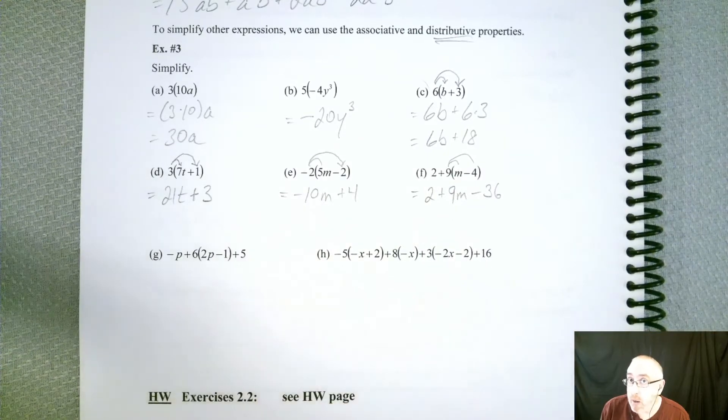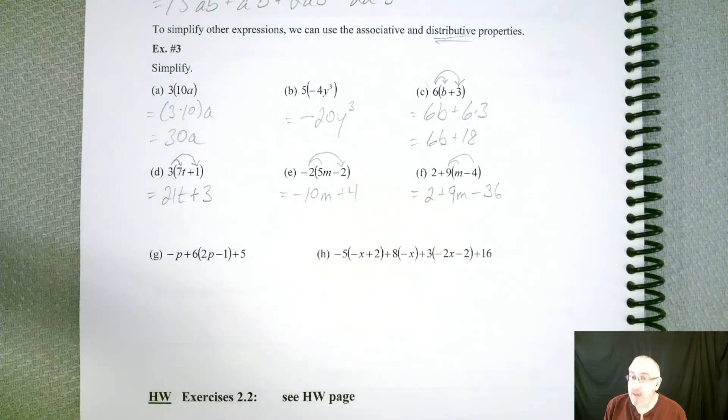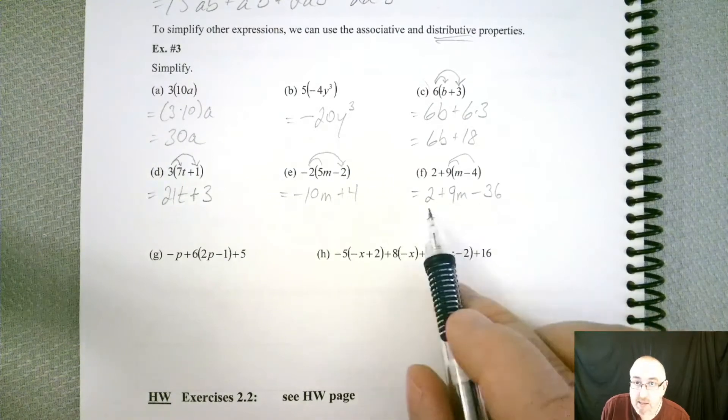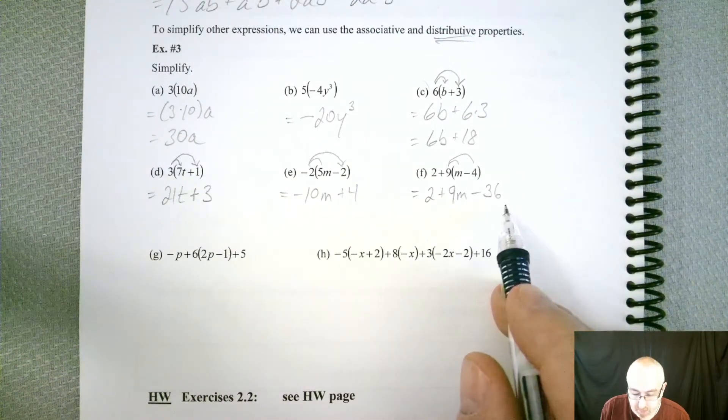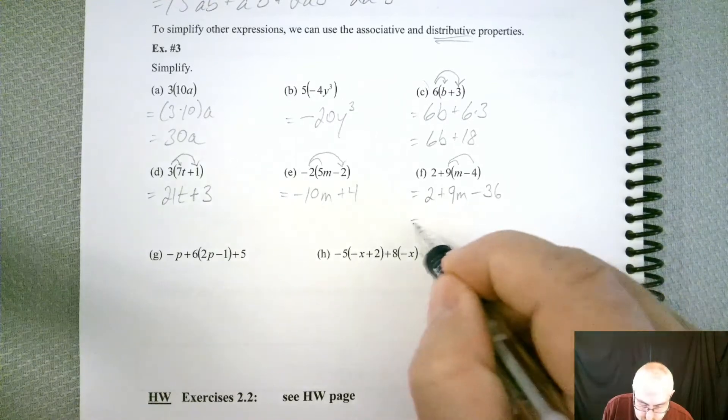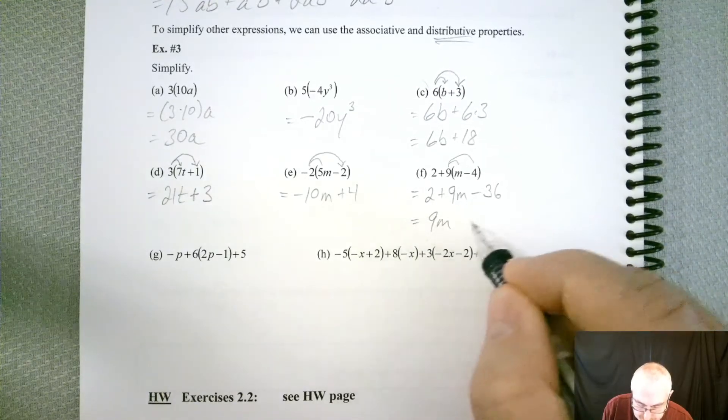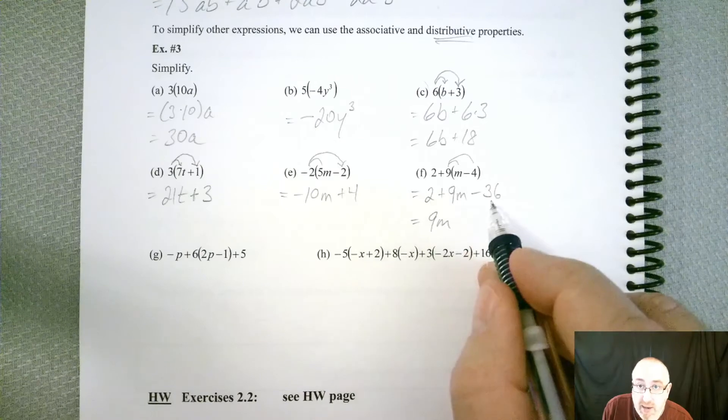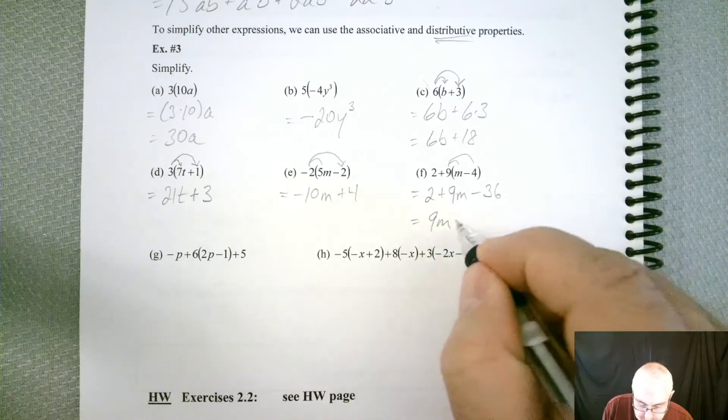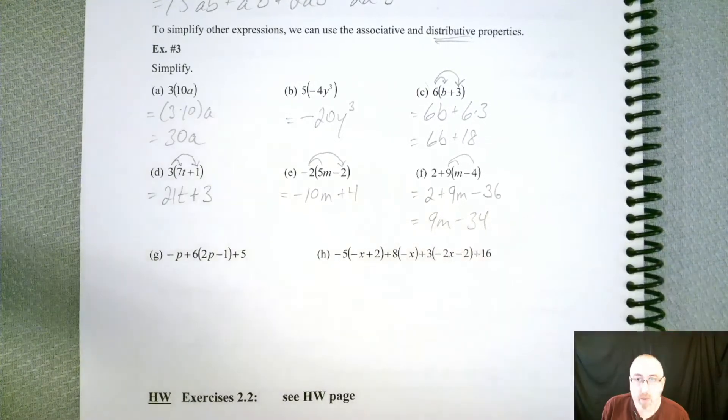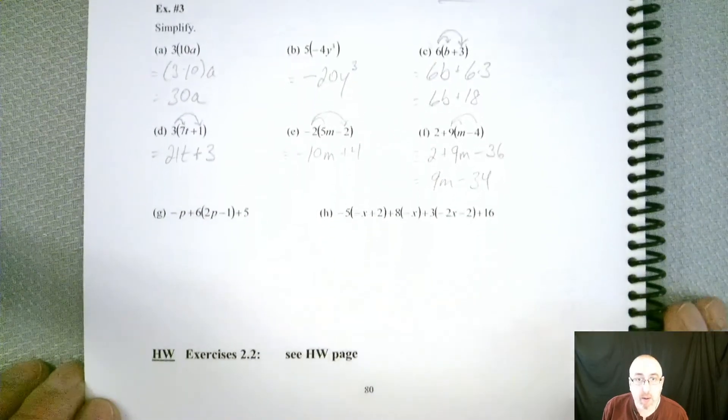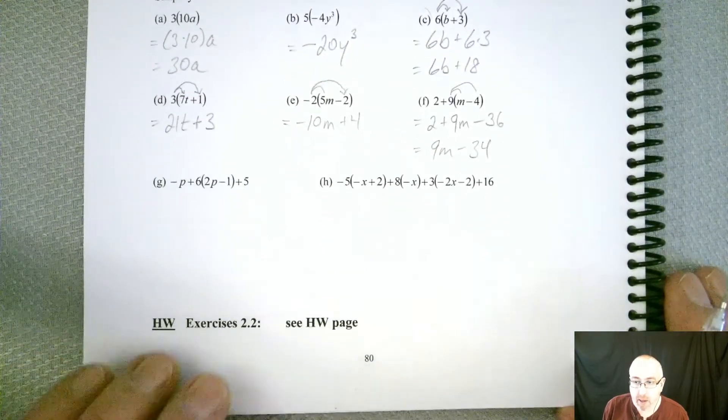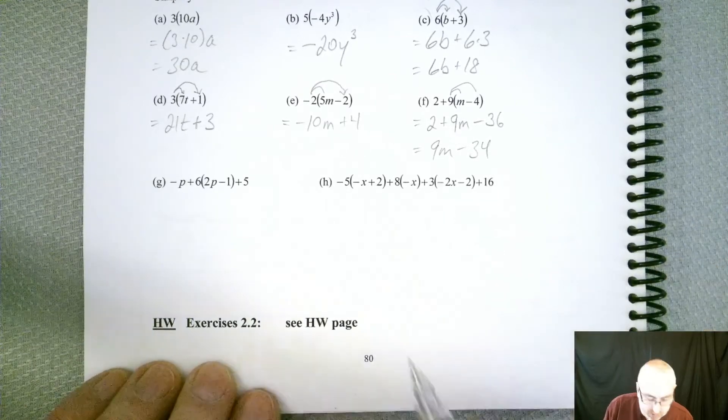All right. And now, could we do anything more to make it more simplified? We got some things that can combine because they don't have any variables on them. So 9m, a positive 2, and a negative 36 better give you a minus 34. So that's as far as we can go, though. All right. Two more, and that'll wrap this video up. A little long, but that's okay.